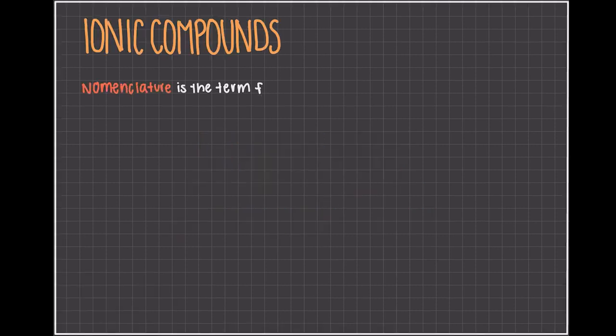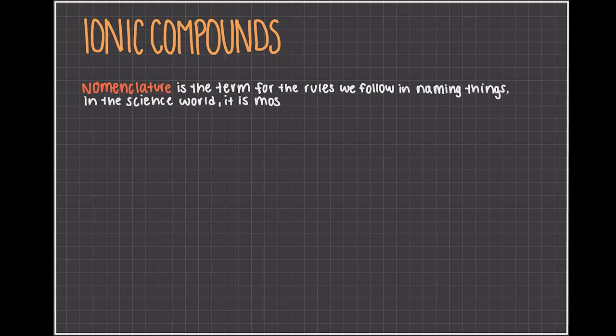Nomenclature is the term for the rules we follow in naming things. In the science world, it is most common to follow IUPAC guidelines. This is so any chemist from any country can know exactly the compound we're talking about when we are discussing different chemicals.